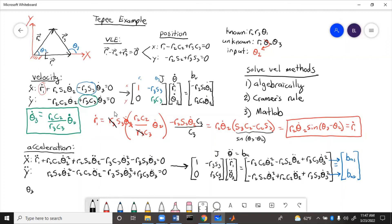So theta 3 double dot, we rearrange, it's going to equal BA2 over R3 C3.